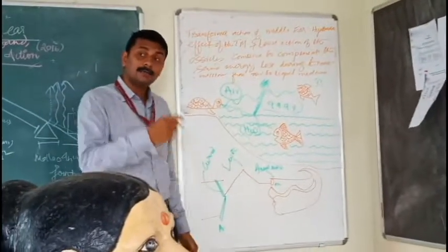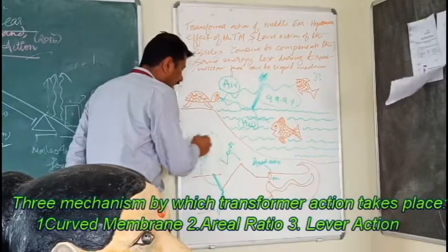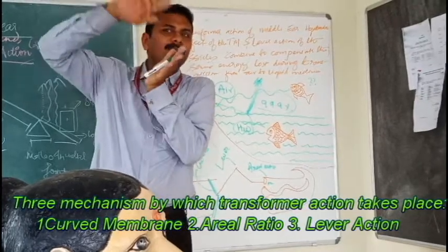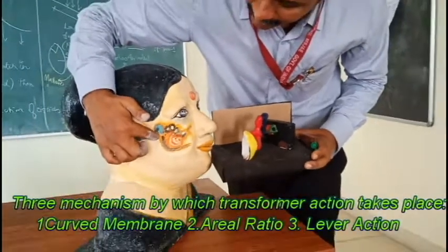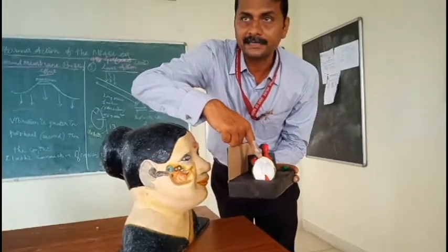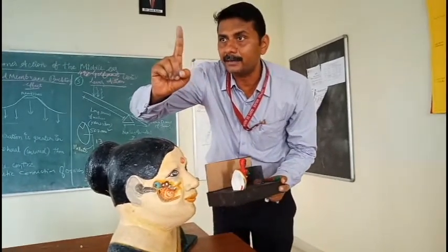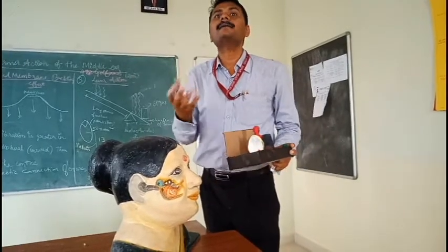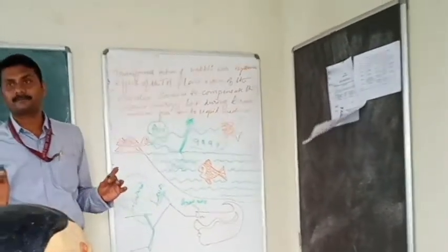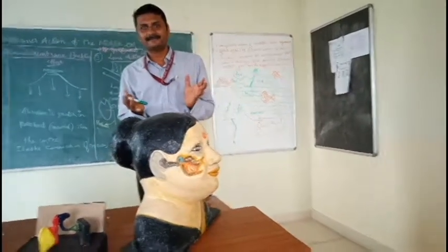The middle ear does impedance matching based upon three primary mechanisms. The first mechanism is the curved membrane — it collects sound. You can see the yellow portion in the diagram which is curved. It collects sound, and that's the first mechanism by which some amount of sound is retained and collected.